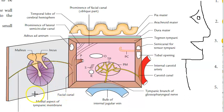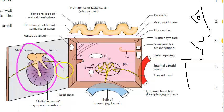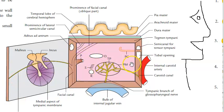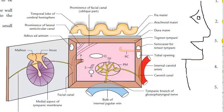Now look at the lateral wall — you will see the tympanic membrane and the chorda tympani nerve. Now the roof: you will see a thin plate of bone called the tegmen tympani.